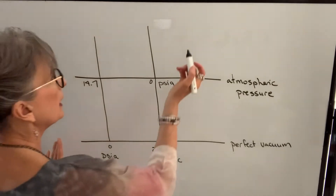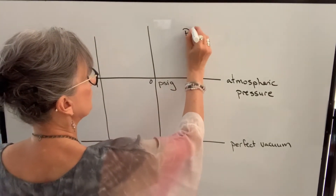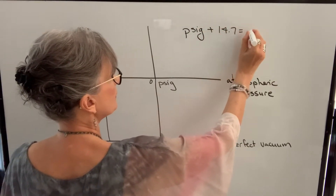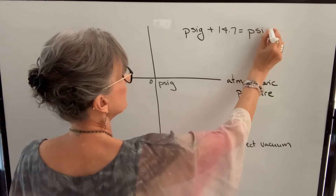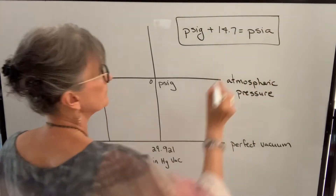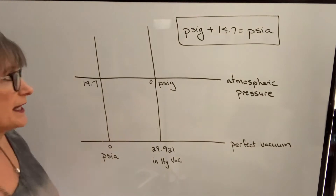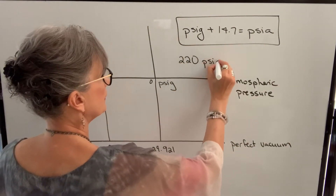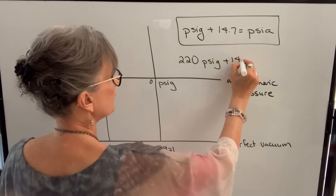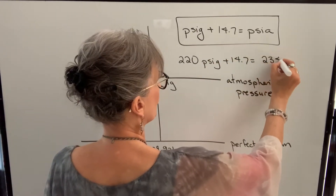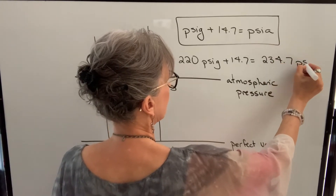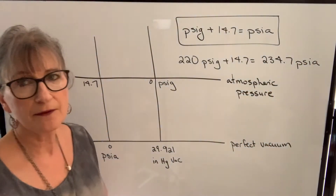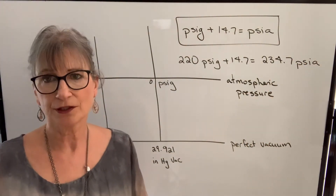PSIA will always be 14.7 greater than PSIG. So if you're given a pressure in PSIG on your gauge, you add 14.7 to get the pressure in absolute. For example, if I had 220 PSIG, I would add 14.7 and get 234.7 PSIA. Once I've changed my gauge pressure to absolute, I can use it in my formula for calculating compression ratio.